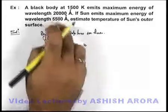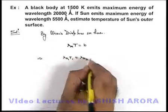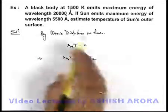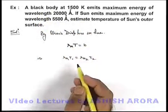This implies for two given situations we can write lambda m1 T1 equals lambda m2 T2. For the given black body and Sun, if we use it, as the Sun can also be treated as a black body, here we can write: